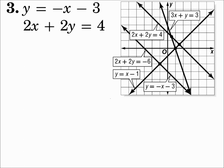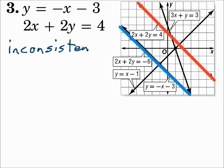Number three: y equals negative x minus 3, which is the blue line, and 2x plus 2y equals 4, which is the red line. Those lines are parallel — they never intersect. This system is called inconsistent.